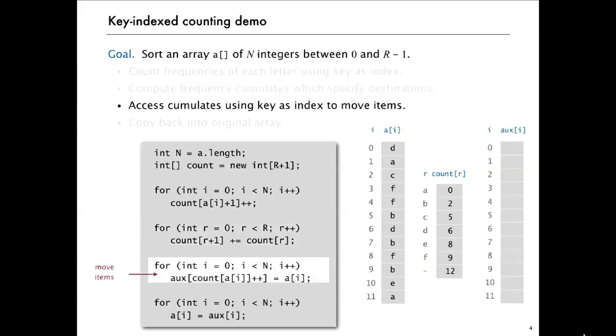So that's the next step, is access the cumulates using the key as the index to move items. So let's take a look. Now remember when we see an A, we're just going to count that as zero. So we're going to go to count zero, and that'll access this entry in the count array. So we go through the whole array to be sorted, and we move each key exactly to where it has to go. And we'll do that one at a time now. So when i is zero, we're looking at the D. The count array corresponding to D has six, so it says just put D in there, and increment that. It means if you get another D, it's going to go into seven. And these things, the way we pre-computed them, are not going to run into one another.